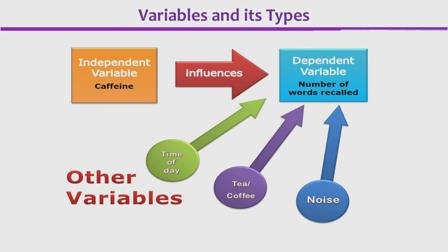For example, if the independent variable was caffeine and the dependent variable was how many words were remembered, then other things like at what time words are being recalled, how much tea was consumed, and the noise level in the room where word recall is being tested — all of these things can have an effect. But we only want to study caffeine.